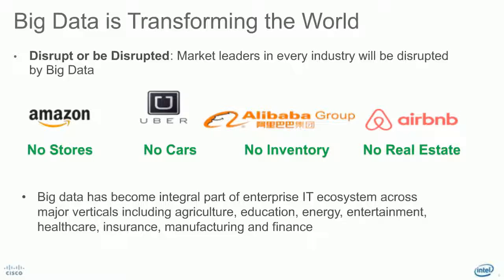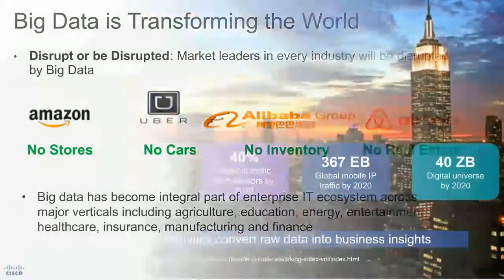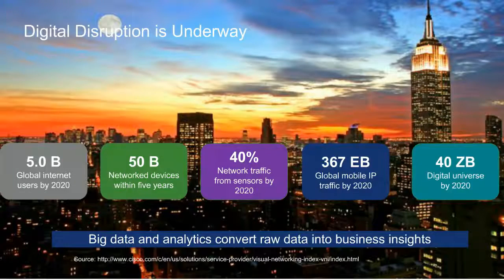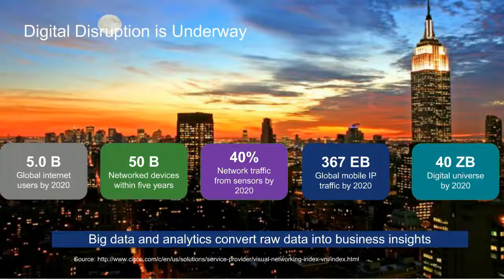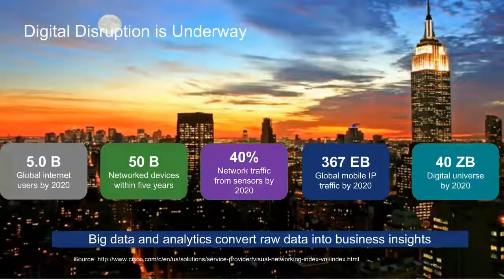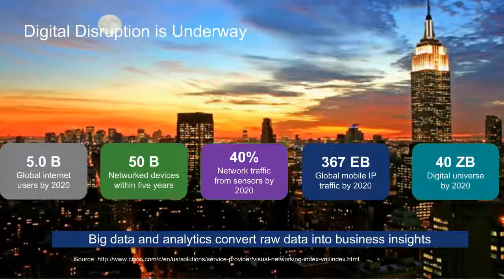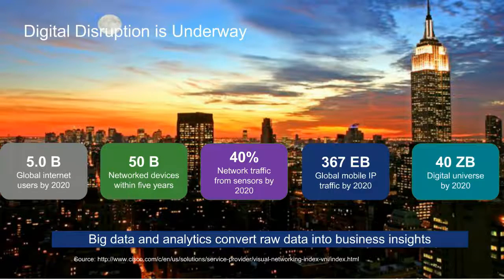This trend has been catching up more and more. If you look at how IoT and digital disruption is underway, four main things are making a lot of difference: people, devices, mobile phones, and processors. By 2020, we'll have over 5 billion people connected to the internet, creating a lot of data through the devices they own — over 50 billion devices. By 2020, we are expected to have over 40% of network traffic generated by these devices, and over 350 exabytes of data generated by mobile phones. All this data needs to be processed, instant value drawn from it, and managed.